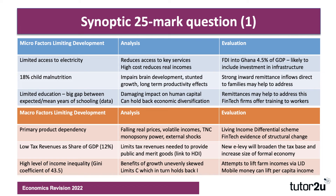Another macro factor limiting development in Ghana is low tax revenues as a share of GDP — only around 12% of GDP is taxed. If the government has limited tax revenue, that means fewer fiscal resources to provide essential public and merit goods like education, healthcare, and housing. You can link that back to HDI and then to development and growth. However, one of the aims of the new e-levy is to broaden the tax base, widen the base of taxation, and increase the size of the formal economy.